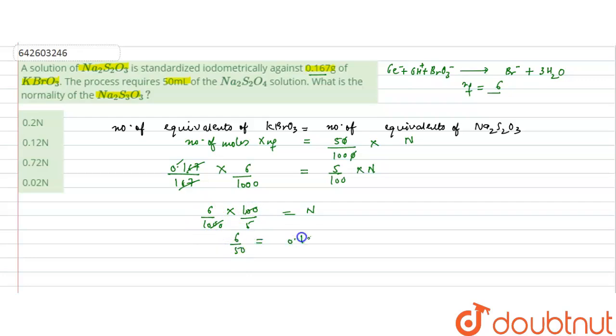That is 0.12 normal. So the normality of Na2S2O3 solution would be 0.12 normal. So the option second is the correct option. The normality is 0.12 normal. So I hope you understood the solution, thank you.